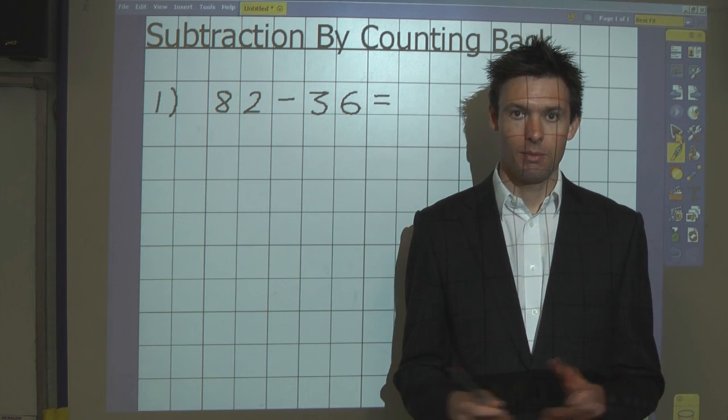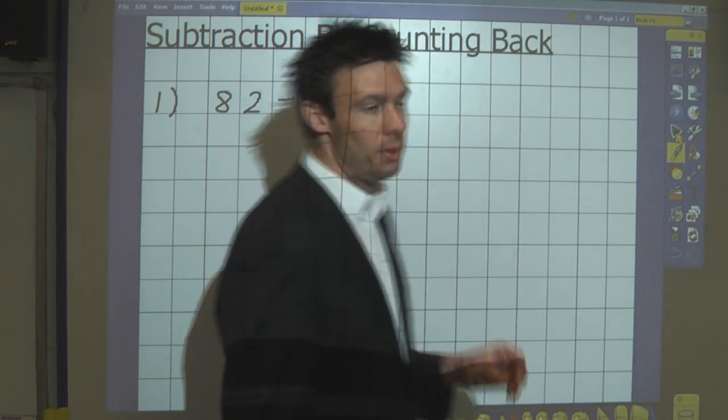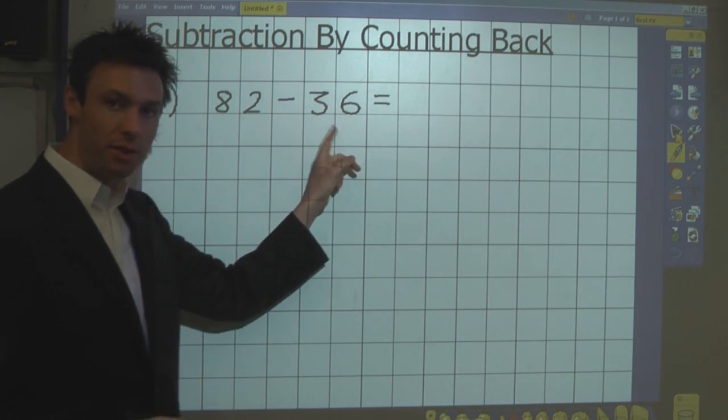And this is where the number line becomes useful. We're going to take this as an example. So we have 82 take away 36.